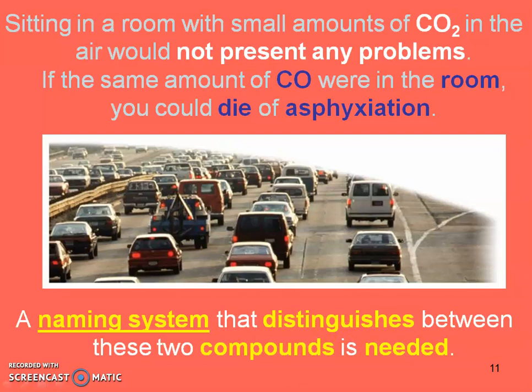Just like sodium and chlorine are each toxic on their own but combine to make sodium chloride — table salt — the naming system that distinguishes between compounds is greatly needed. Different chemical formulas with the same elements but different amounts can mean life or death, such as with antibiotics. Carbon dioxide is okay, but carbon monoxide is not — another example of how the same elements in different ratios create very different compounds.